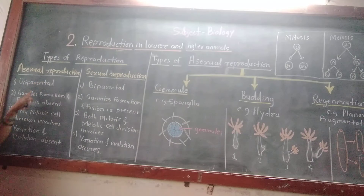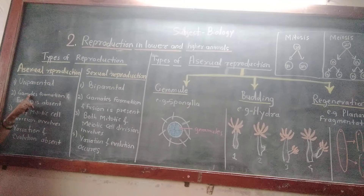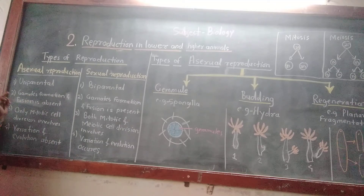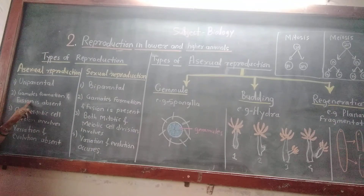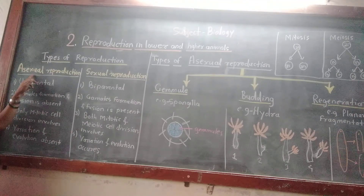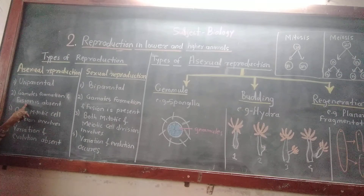In asexual reproduction, only one parent is required and both sexes are not required. Therefore it is called asexual reproduction. Gamete formation and fusion is absent in asexual reproduction.